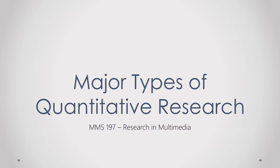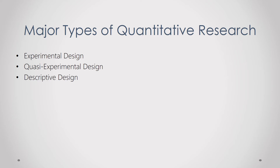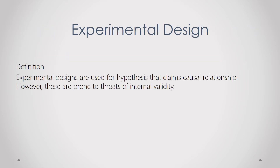Hi everyone, my name is Jeremiah Ramos. In this section we'll discuss the major types of quantitative research. There are three major types: the experimental design, quasi-experimental design, and descriptive design.